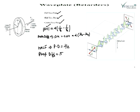Suppose t is the thickness of the crystal plate. The optical path of the ordinary and extraordinary rays in the plate will be μ₀t and μₑt respectively. The path difference between the two emergent rays is then (μ₀ − μₑ)t.